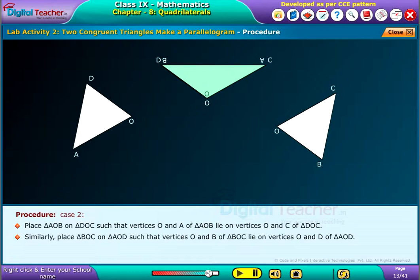Similarly, place triangle BOC on triangle AOD, such that vertices O and B of triangle BOC lie on vertices O and D of triangle AOD.